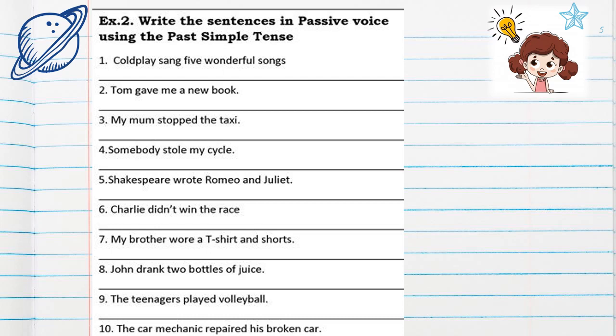Number five: Shakespeare wrote Romeo and Juliet. Romeo and Juliet is the object, 'wrote' is the verb, Shakespeare is the subject — this is the person. Number six: Charlie didn't win the race. The race is the object. 'Didn't win' — it's a past negative. The verb is 'win', Charlie is the subject.